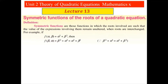For example, if f is a function of alpha and beta equal to alpha squared plus beta squared, then if we replace alpha with beta and beta with alpha, this function will be equal to beta squared plus alpha squared, which is the same as alpha squared plus beta squared. This is an example of a symmetric function.